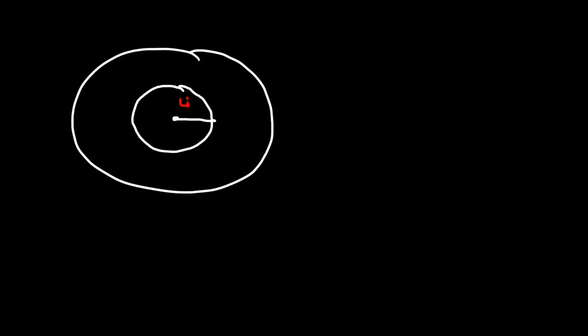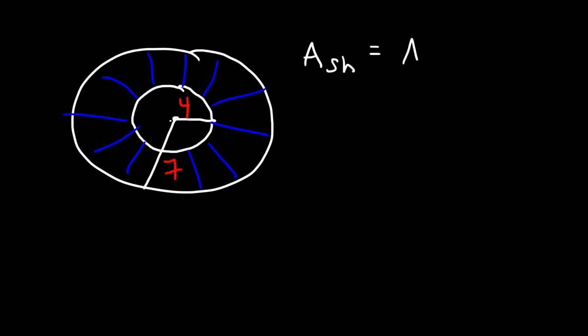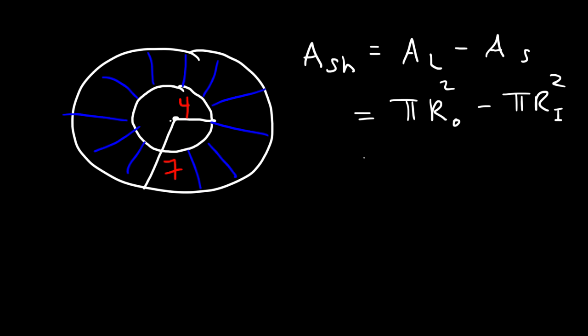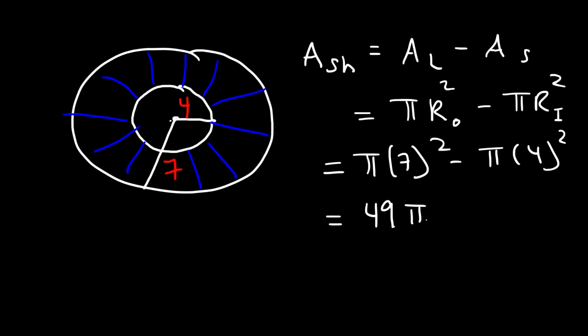Let's try another simple problem before the harder ones. We have a circle within another circle: the inner radius is 4 units and the outer radius is 7 units. The area of the shaded region is the area of the large circle minus the area of the small circle: pi times 7 squared minus pi times 4 squared, which is 49 pi minus 16 pi, giving us 33 pi as the exact answer.